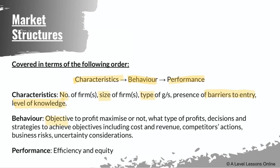For behavior, I'll look at the objectives — do firms want to profit maximize or not? What type of profits do they earn? Decisions to achieve objectives including cost and revenue — do they want to minimize cost, how do they maximize revenue? Do they rely on competitors' actions — you notice this a lot in oligopolies — and how uncertain are the conditions in the market?